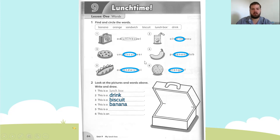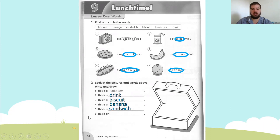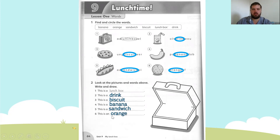Number five: this is a sandwich — S-A-N-D-W-I-C-H. Number six: this is an orange — O-R-A-N-G-E. And can you see we have the word 'an'? The reason we use 'an' is because orange starts with O, and O is a vowel. Any word that starts with one of our five vowels, we write 'an', not 'a'.